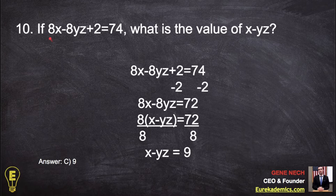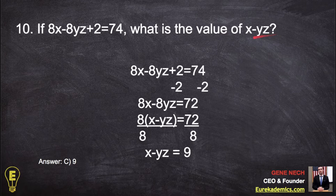Alright, so then we're given this equation, 8x minus 8yz plus 2 equals 74. What is the value of x minus yz? So what they're asking is, can we find the value of these variables in this combination?